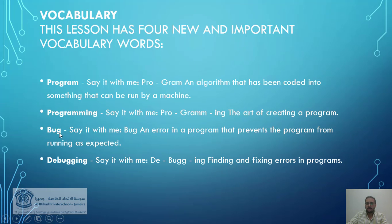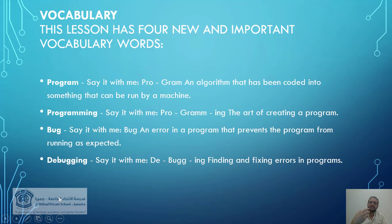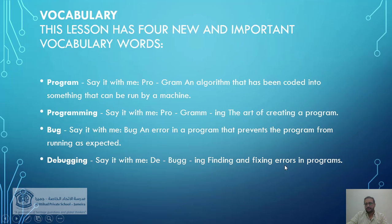"Bug" — it's an error in a program that prevents the program from running as expected. When you have a problem in your program, we call it a bug. "Debugging" is finding the error and fixing that error in programs.